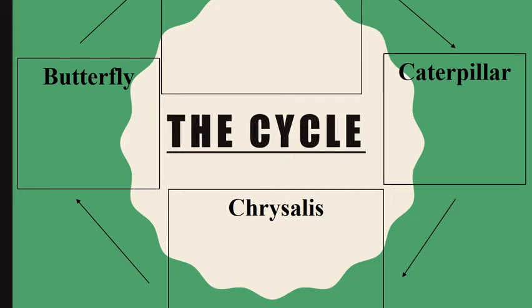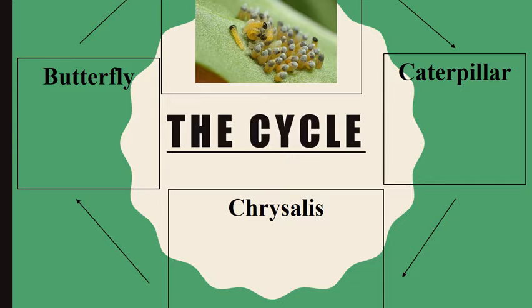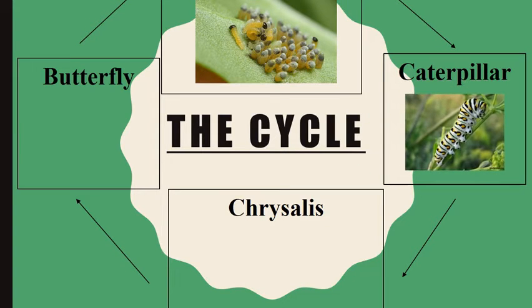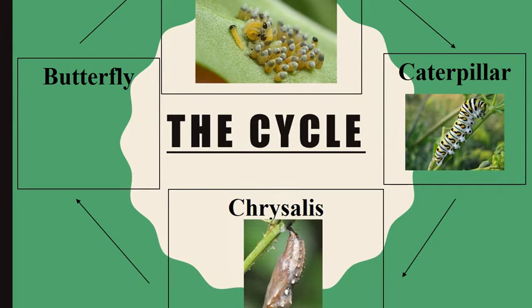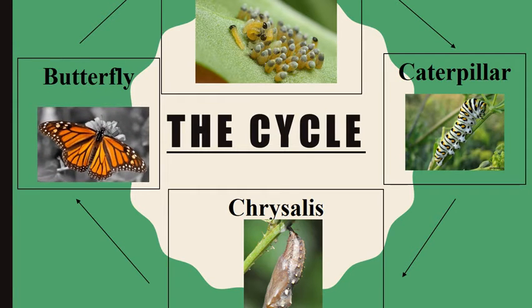Let's take a look at the butterfly life cycle. First, the butterfly lays eggs. Then, they're hatched as caterpillars. After eating and growing, they become a chrysalis. And then finally, a beautiful butterfly.